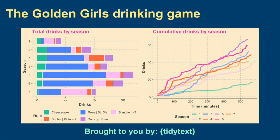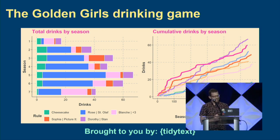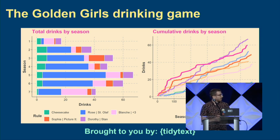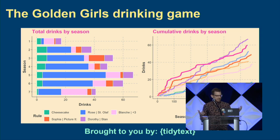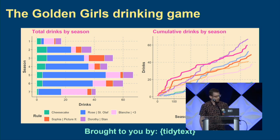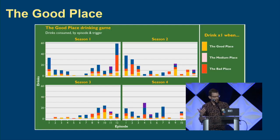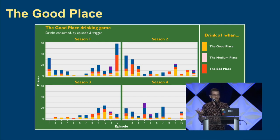This is how I learned Tidy Text. I use it all the time now in all my projects, both at work and for side projects. Golden Girls is a very old show and you might not be interested in that, so we can use Tidy Text for a lot of other things — like the Good Place drinking game. Because once you learn how to do it once, it's really easy to repeat.